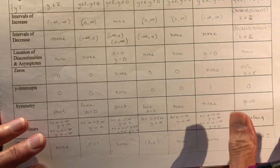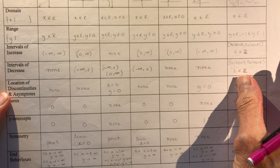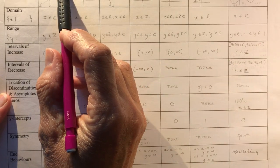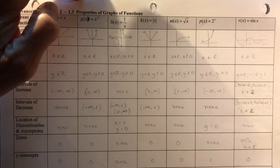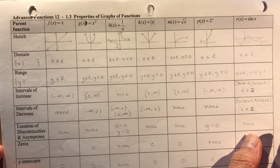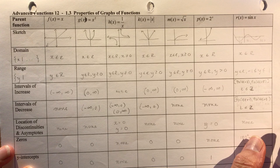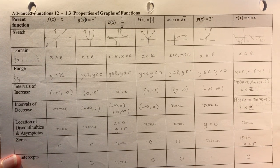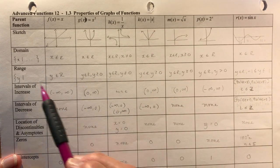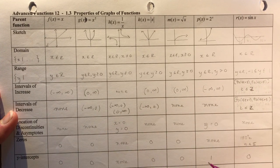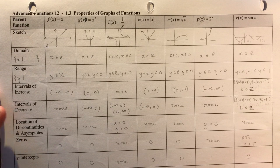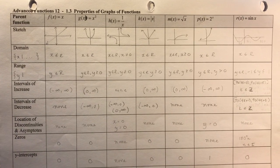There is a homework assignment — number 12 on 1.3, Properties of Graphs. I'm going to show it in two parts so you can freeze-frame and have a look. This is something your teacher would probably ask you to fill in — it's a very important set of descriptors for the different functions. We'll go over two or three of these together, and then you can take a look on your own time.